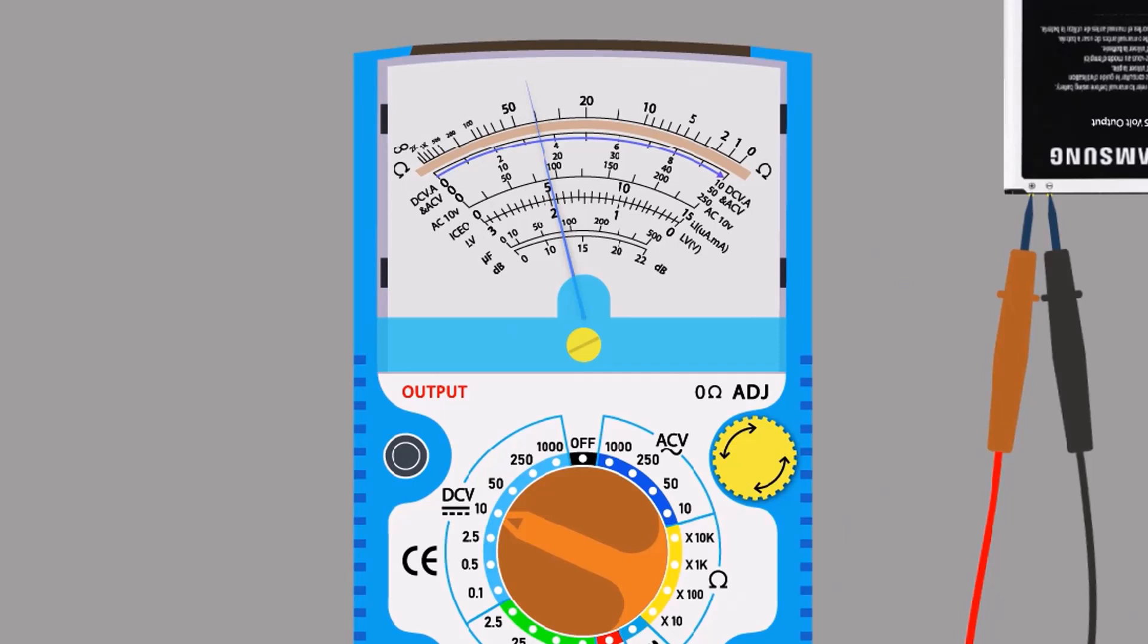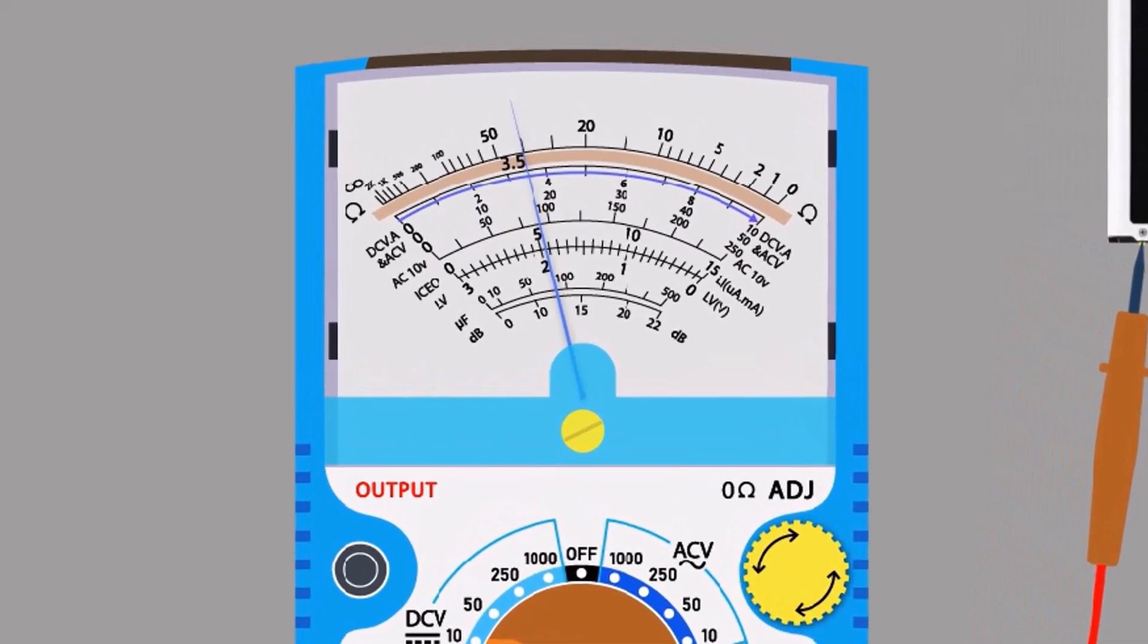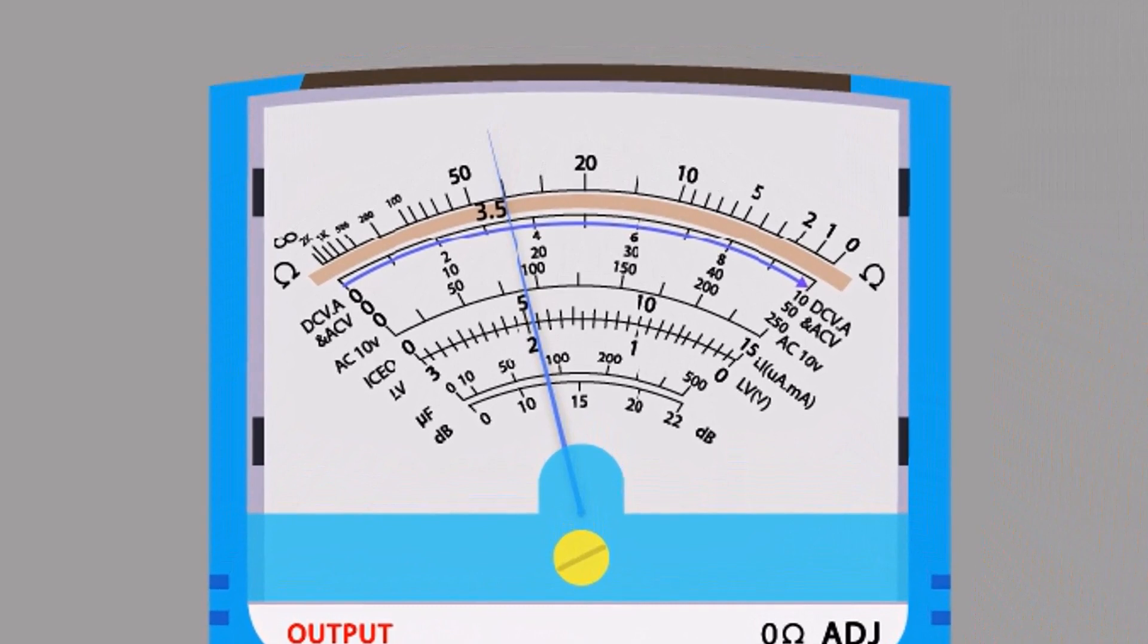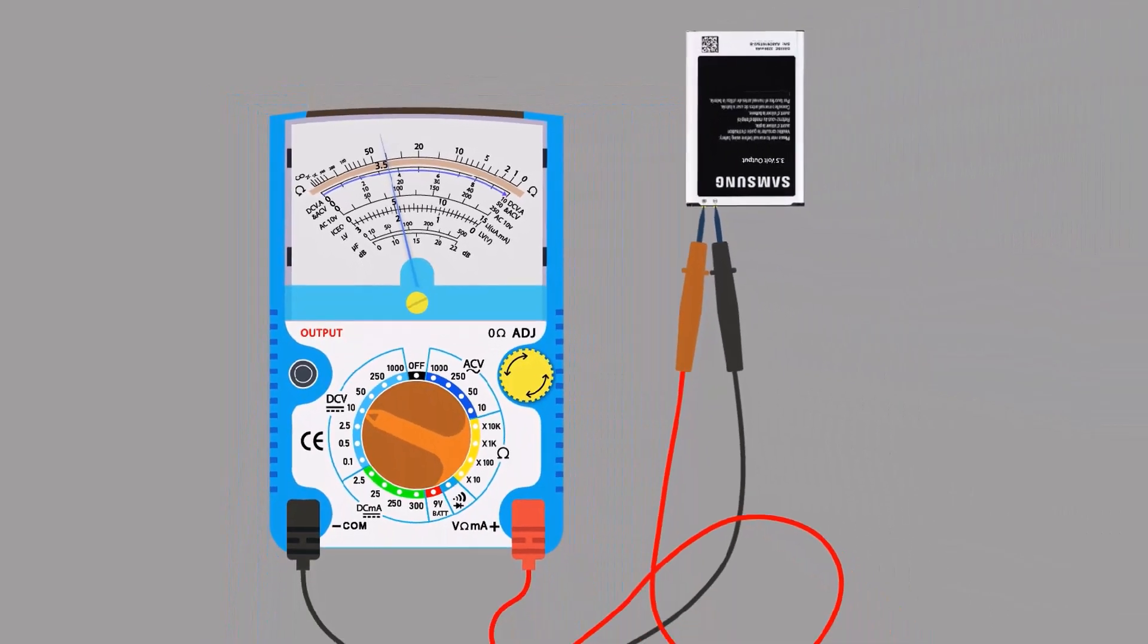If we select the 50-volt range, then we will read the 50-volt scale, and if we select the 250-volt range, then we will read the 250 scale. But for now, we will read the 10-volt scale. If we see the needle, it shows about 3.5 volts. This is how we can measure DC voltage.